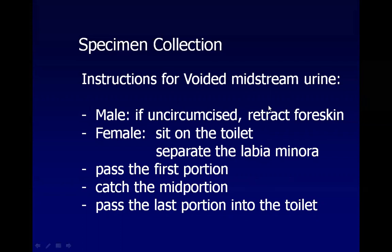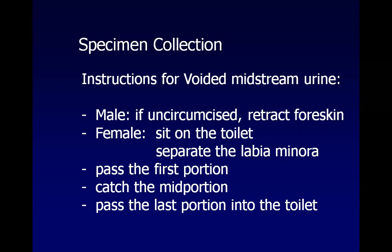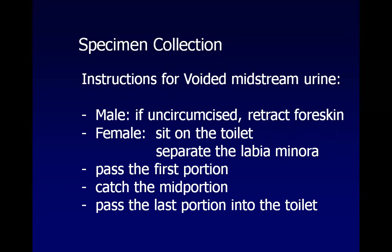Instructions for voided midstream urine collection are important to prevent contamination. For uncircumcised males, retract the foreskin; for circumcised males, wash with soap and water. For females, sit on the toilet and separate the labia minora. Both males and females must catch the midportion of the stream and pass the first and last portions.